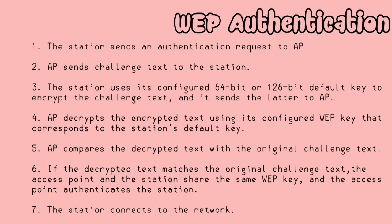WEP Authentication continued: 4. The AP decrypts the encrypted text using its configured WEP key that corresponds to the station's default key. 5. The AP compares the decrypted text with the original challenge text. 6. If the decrypted text matches the original challenge text, then the access point and the station share the same WEP key, and the access point authenticates the station. 7. The station connects to the network.